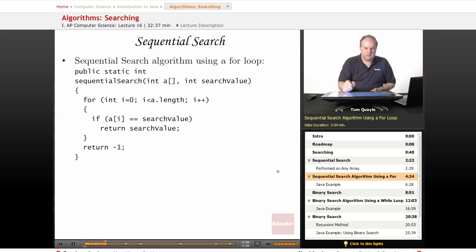So, here's the sequential search algorithm as implemented with a for loop. We have sequential search, and we're going to accept two parameters. We're going to accept an array A of integers.